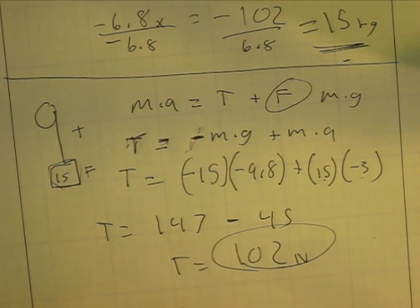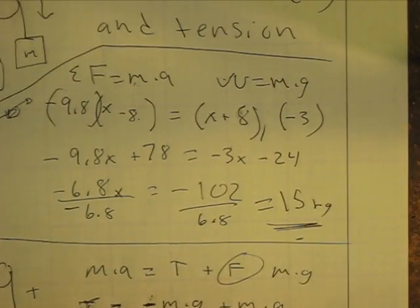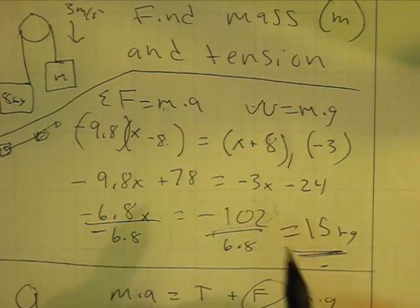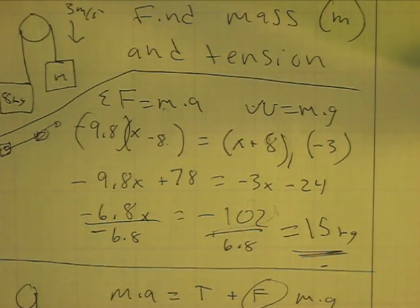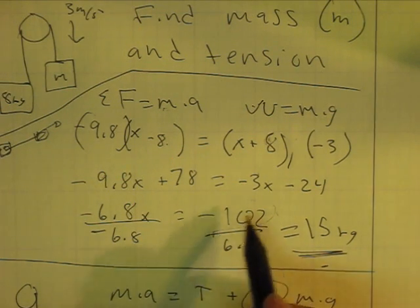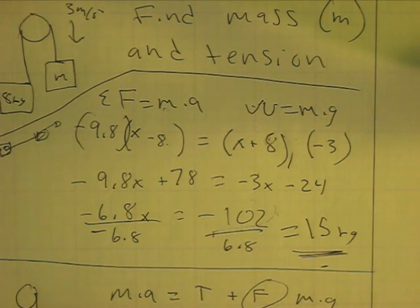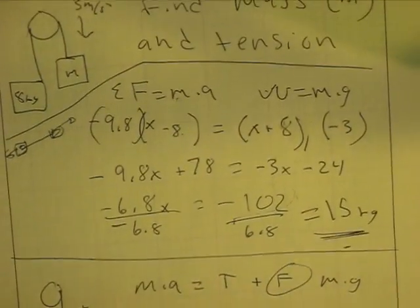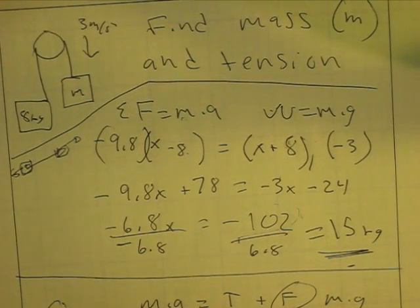So there's our tension right there, 102 N. And if you notice, then this 102 right here is actually the same as this one right here. We already kind of found tension. It's kind of really hard to notice that you found tension the same time as mass, so a lot of people are going to end up doing two different processes. But that right there is mass and tension. Thanks for watching.